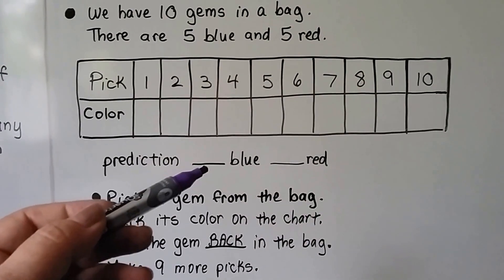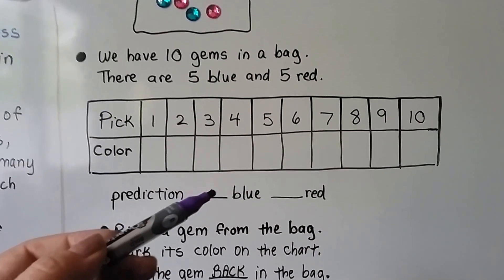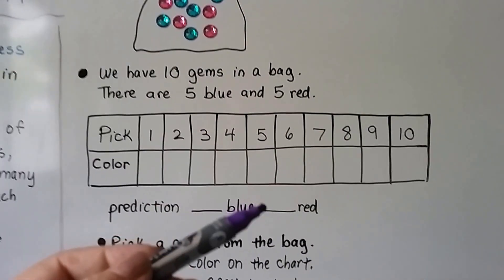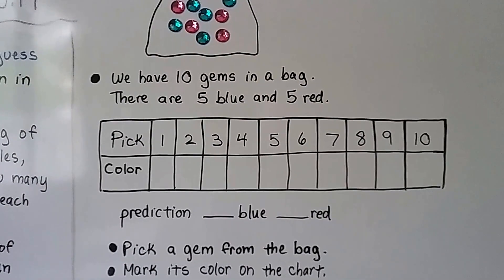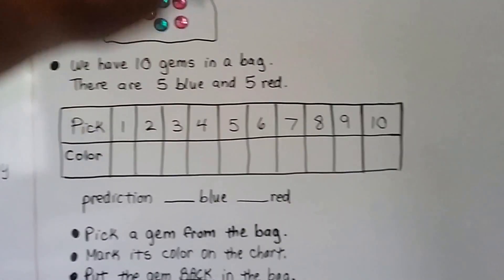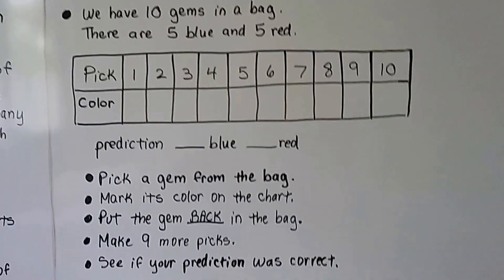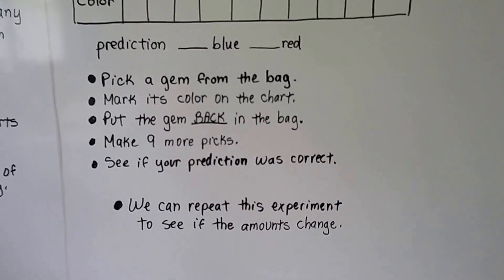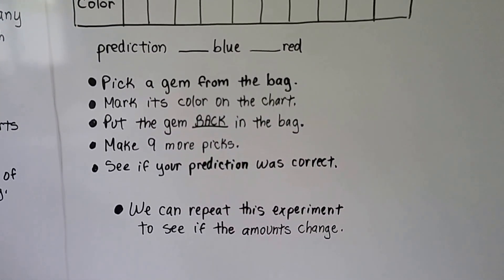So, maybe we would predict that we're going to pick blue five times and red five times because that's how many are in the bag. But if we pick them without looking, we could get any color, couldn't we? And we can repeat this experiment to see if the amounts change.